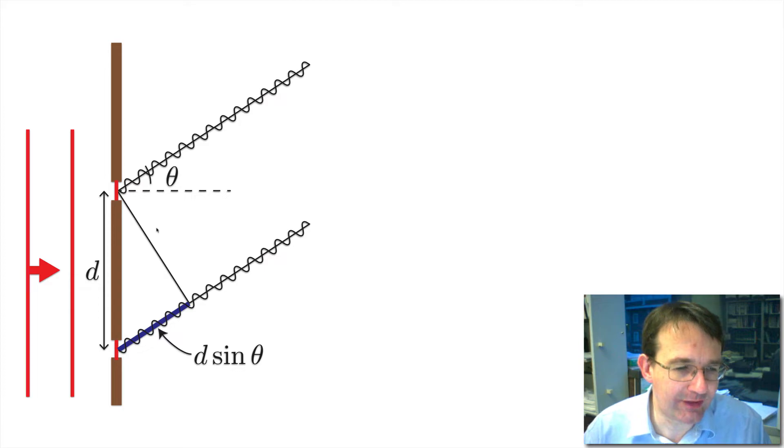Before we go and have a look at the diffraction pattern we get, let's first calculate it so we know what to expect. Here we have two slits, each of which is narrow, so we're going to assume that the narrowness of the slit means we can treat this as a point source essentially.